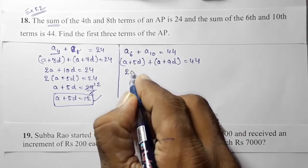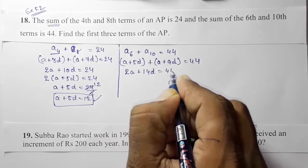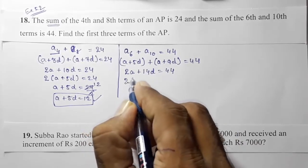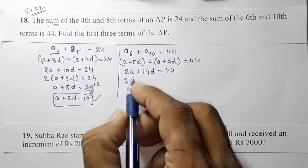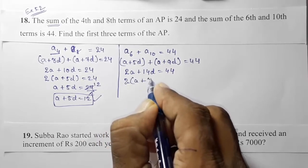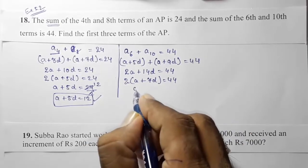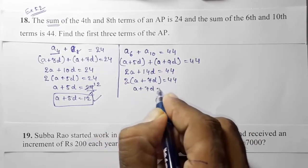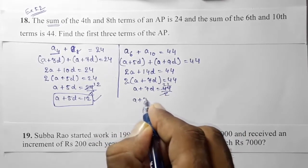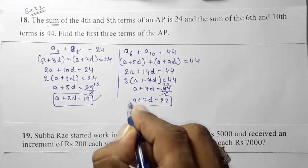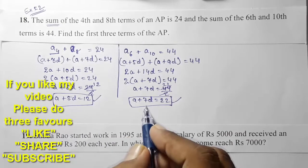Their sum equals 44. Since there is a plus sign, no sign changes. Adding gives 2a + 14d = 44. Taking 2 as common, we get a + 7d = 22. So the second equation is a + 7d = 22.